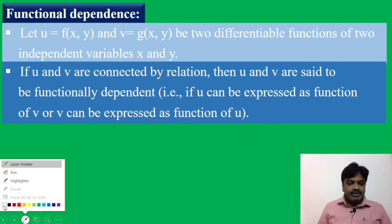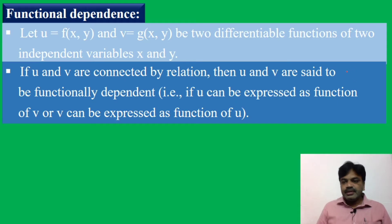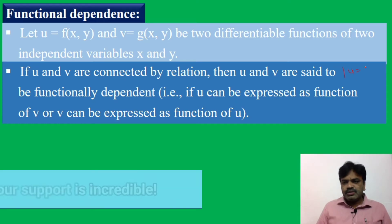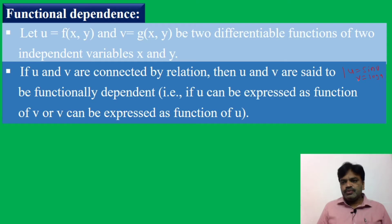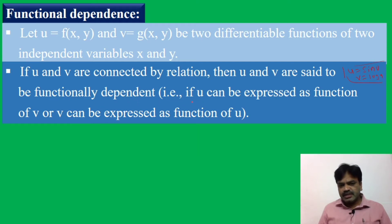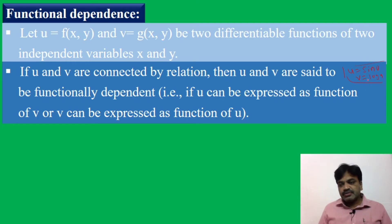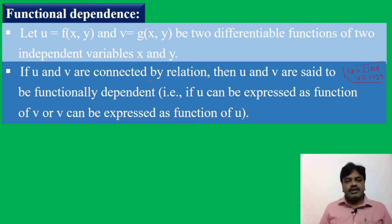For example, we can write u times v equals sin v, or v equals log u. Here there is a relation between u and v, so u and v are said to be functionally dependent. That is, u can be expressed as a function of v, or v can be expressed as a function of u. Functional dependence simply means u and v are connected by a relation — that is very important.